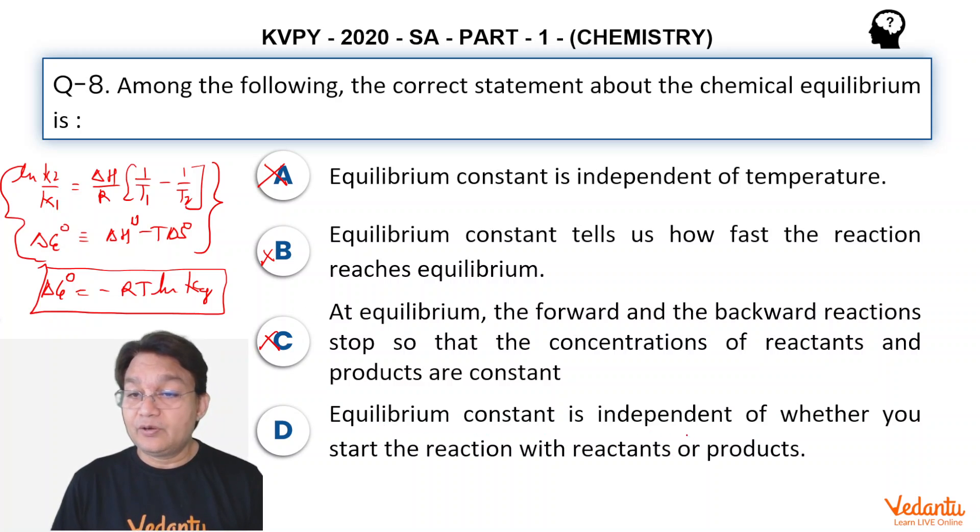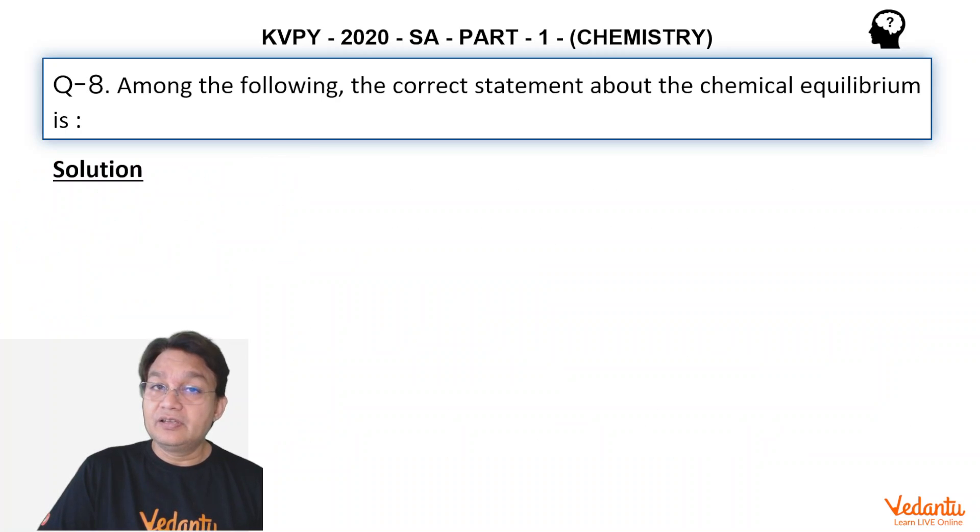Equilibrium constant is independent of whether you start the reaction with reactant or product. That's absolutely correct. If you start with the product, you are going to get some amount of reactant as well as some amount of product. If you start with a reactant, you are going to get some amount of product and some amount of reactant. So equilibrium constant is obviously independent whether you start with reactant or product. The situation has to come at the equilibrium.